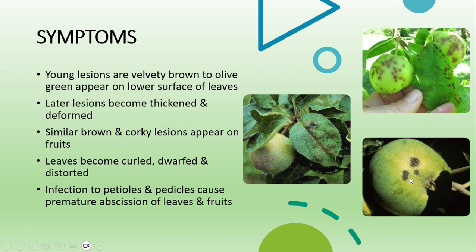Leaves become curled, distorted, and deformed. Infection to petioles and pedicels causes very premature abscission of the leaves and fruits. So dropping of leaves and fruits is very premature due to this disease.